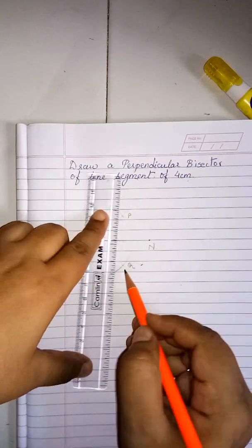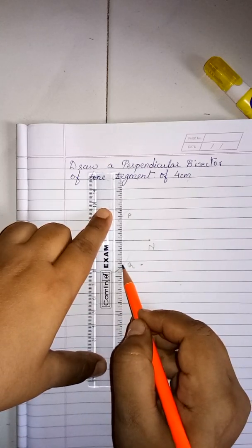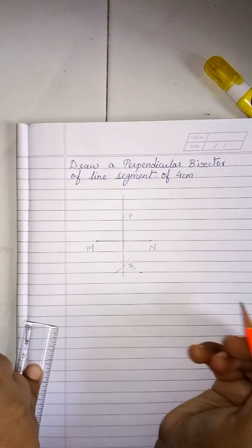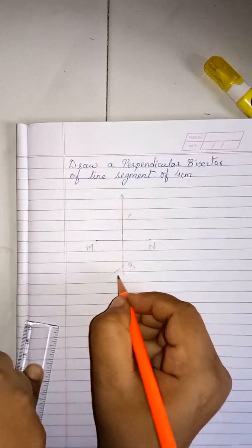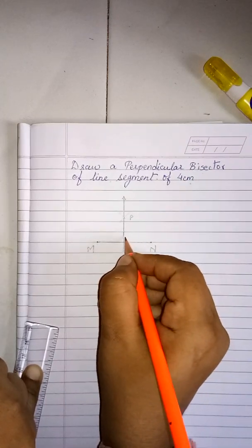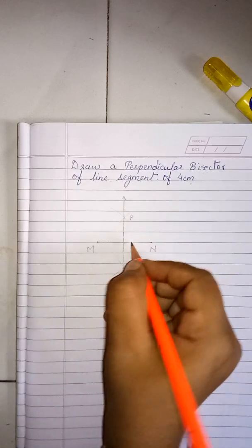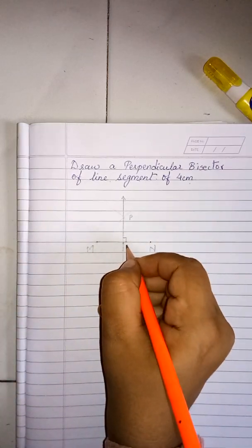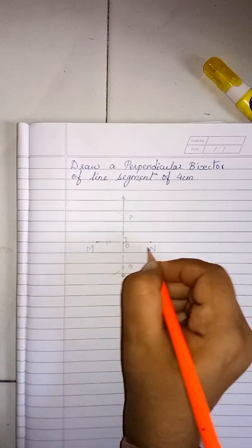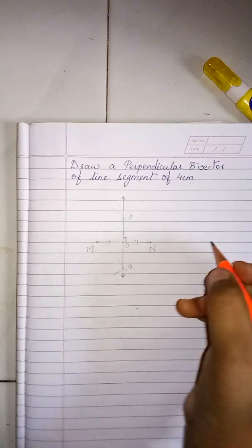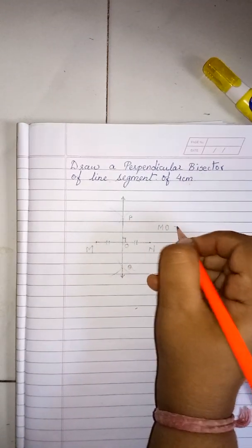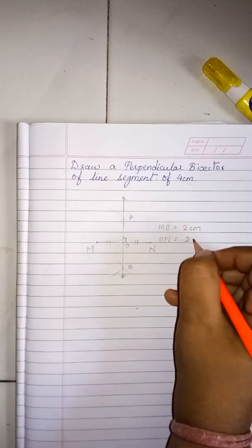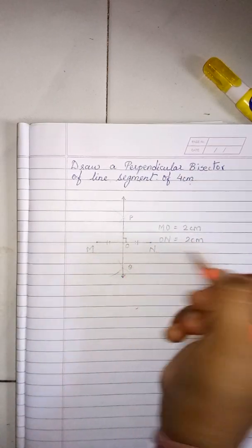Draw a line from point P to point Q with arrows on both sides. Whenever a line bisects a segment it is always at 90 degrees. Name the midpoint as O. So MO is equal to 2 cm and ON is equal to 2 cm — the perpendicular bisector has divided the line segment MN into two equal parts.